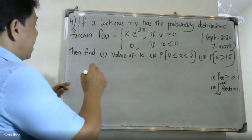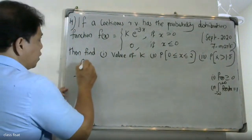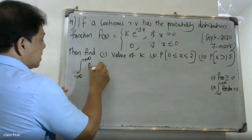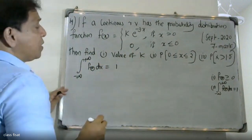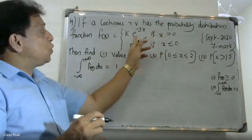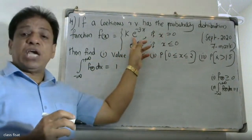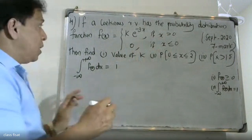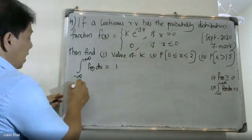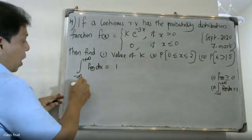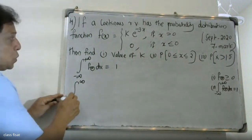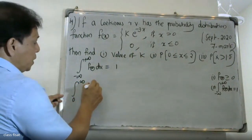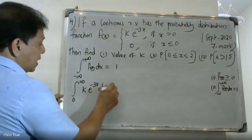To find the value of k, we apply the condition: the integral from minus infinity to plus infinity of f(x) dx equals 1. Since f(x) = k·e^(−3x) for x > 0 and 0 otherwise, this becomes the integral from 0 to infinity of k·e^(−3x) dx equals 1.